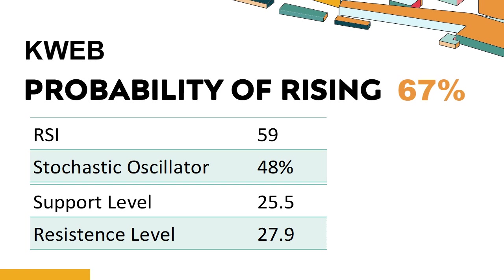The probability of KWEB share price rising is 67%. When the probability of rising is higher than 50%, it means that the stock has a higher chance of rising. If the probability of rising is lower than 50%, it means that the probability of falling is high. Combining multiple technical analysis indicators, KWEB has four bullish signals and three bearish signals.